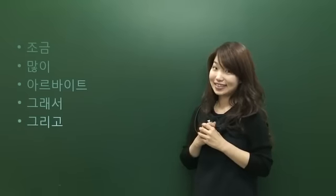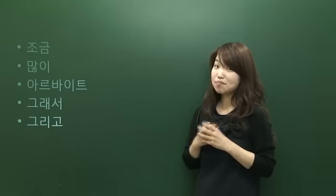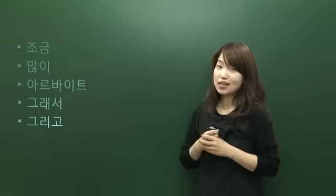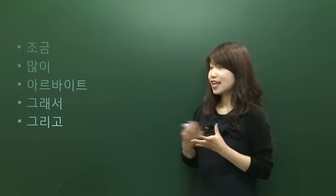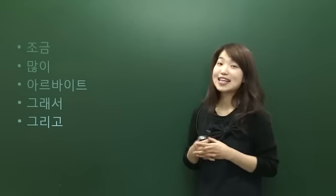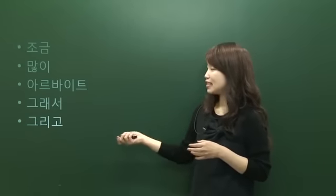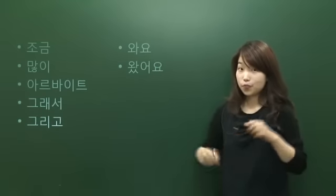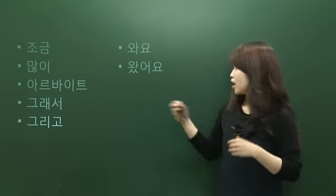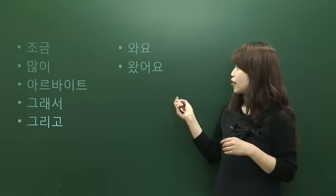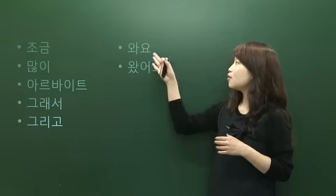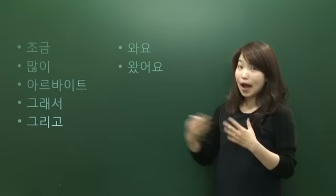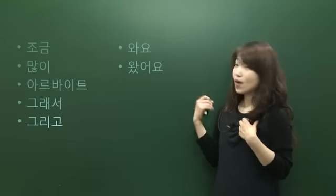아르바이트 means part-time job. 그래서 means so. 그리고 means and. Say 그리고. 와요 — that means come. 왔어요 is past tense of 와요, that means came. 학교 와요. 학교 왔어요. 학교 means school.